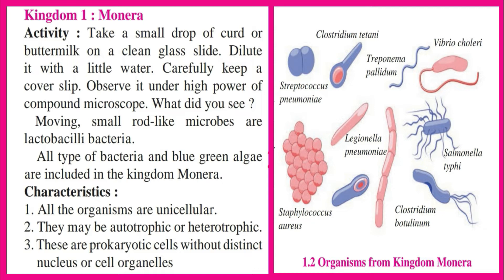Kingdom One: Monera. Activity — Take a small drop of curd or buttermilk on a clean glass slide. Dilute it with a little water. Carefully keep a cover slip. Observe it under high power of a compound microscope. The moving small rod-like microbes are Lactobacilli bacteria. All types of bacteria and blue-green algae are included in the Kingdom Monera. Characteristics (Prokaryotic): 1. All organisms are unicellular. 2. They may be autotrophic or heterotrophic. 3. These are prokaryotic cells without a distinct nucleus or cell organelles.